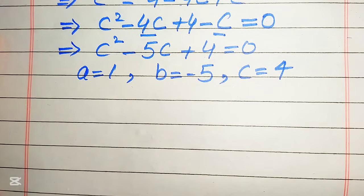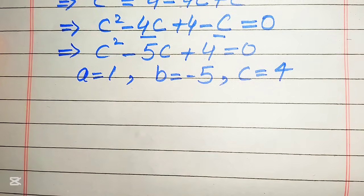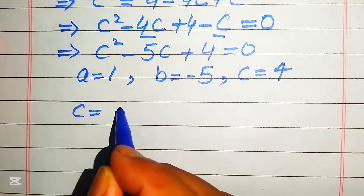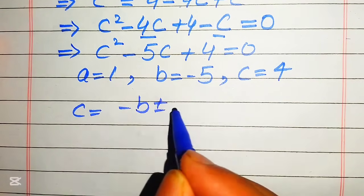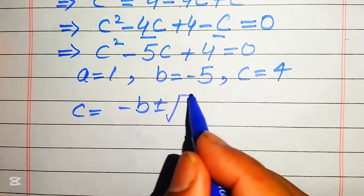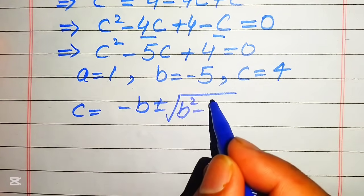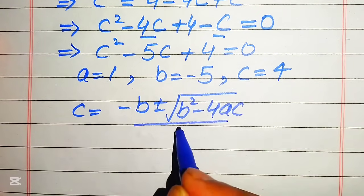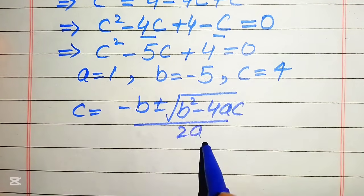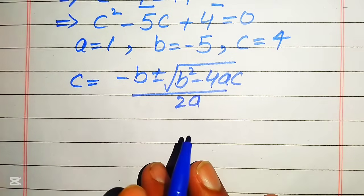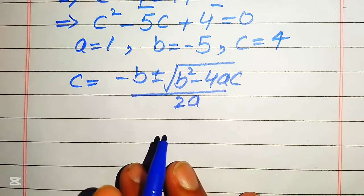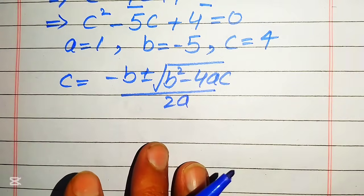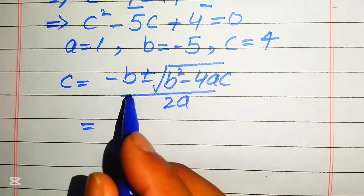We state the quadratic formula as c equals negative b plus or minus square root of b squared minus 4 times a times c, all divided by 2 times a. Now we need to put the values of a, b, and c into this formula.